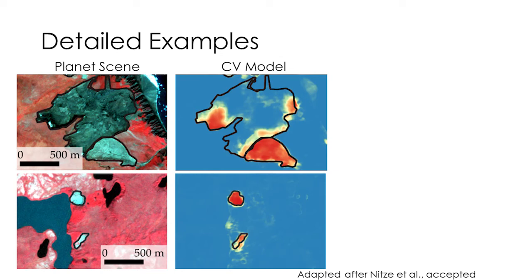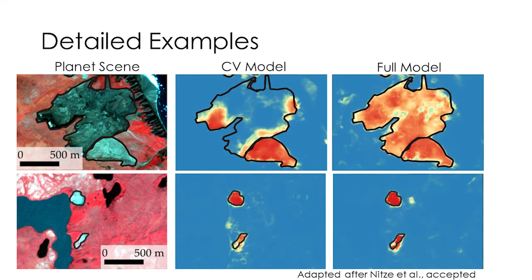In the Horton region, some parts are better classified — the model is most certain near the headwall. In the Lena example, the larger slump classifies very well; the smaller, longer slump is not perfectly modeled but still quite good. We also have the full model — trained on all six regions — and when a region is known to the model, it is pretty confident for most areas and locations.